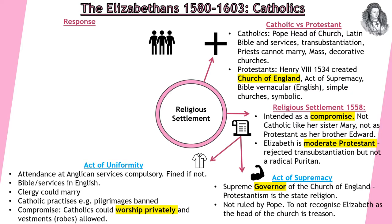Then we have the Act of Uniformity. This is where she expects all citizens of England to attend Anglican — Church of England — services on a Sunday. If you don't, you're going to be fined. Bible services are going to be in English. The clergy could marry. Some Catholic practices like pilgrimages are completely banned and prohibited. But the compromise here is that Catholics could worship privately, and some vestments that priests would wear — the robes — would be allowed.